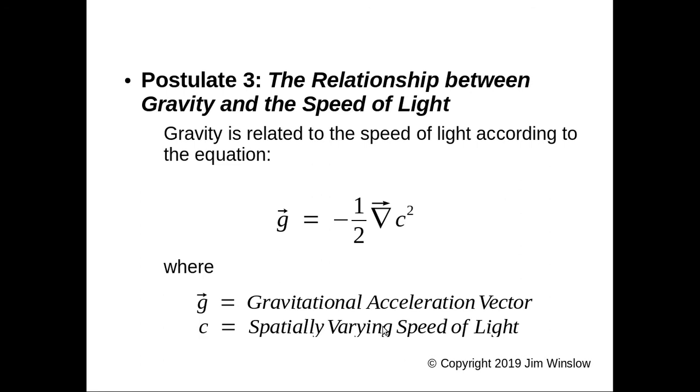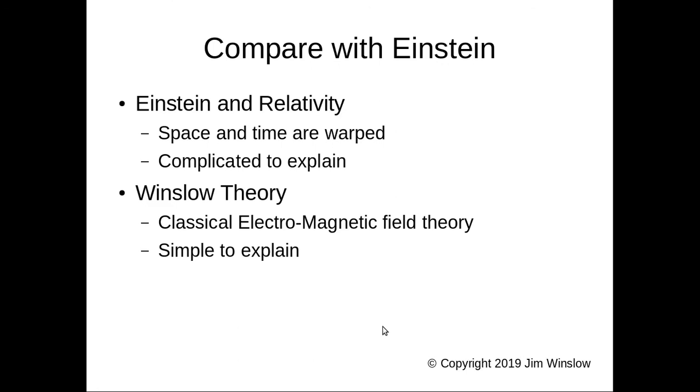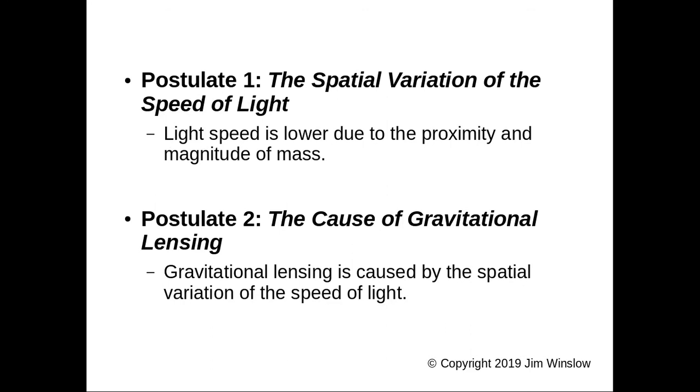So here's the final equation. Well before we go on, let's go back to the original postulates just as a summary. Here's the first postulate: the spatial variation of the speed of light. Light speed is lower due to the proximity and magnitude of mass. The cause of gravitational lensing: gravitational lensing is caused by the spatial variation of the speed of light.